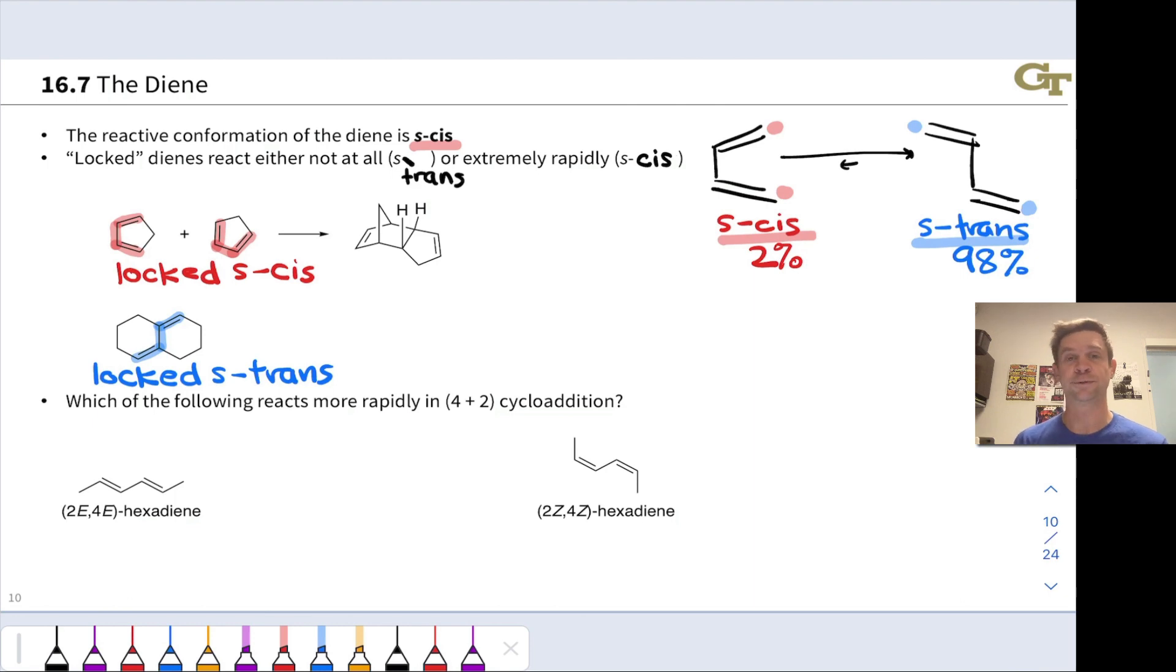If you hit this with a dienophile, heat the crap out of it, add a catalyst, do whatever you want to do, it will never react in a 4-plus-2 cycloaddition. Unless it's a stepwise cycloaddition, in which case we're out of the pericyclic realm entirely, this is pretty much unreactive in pericyclic 4-plus-2 cycloadditions because it's locked in the S-trans conformation.